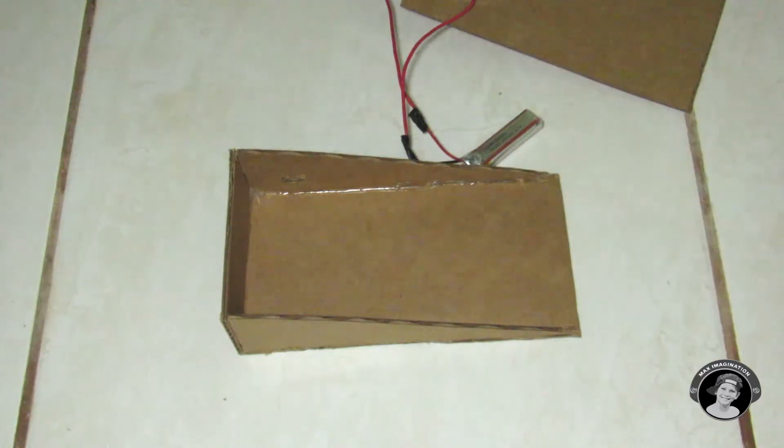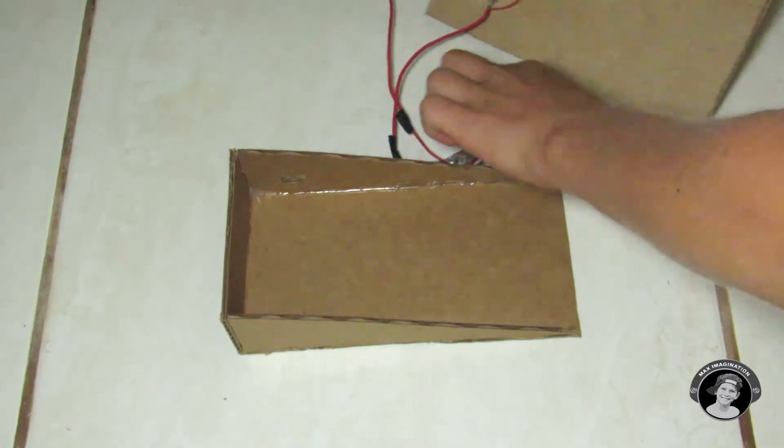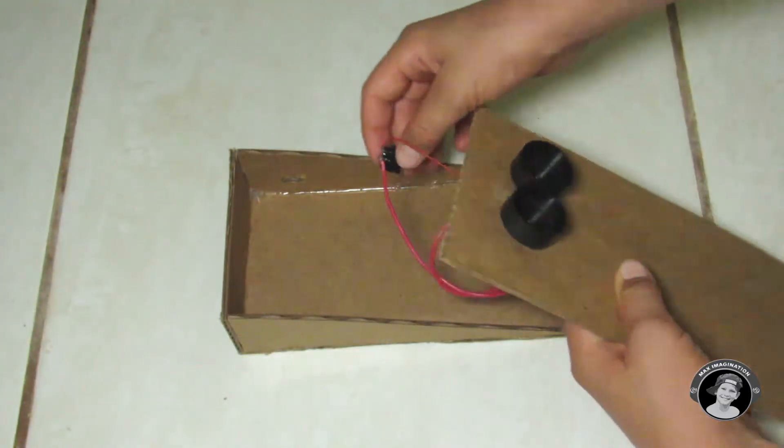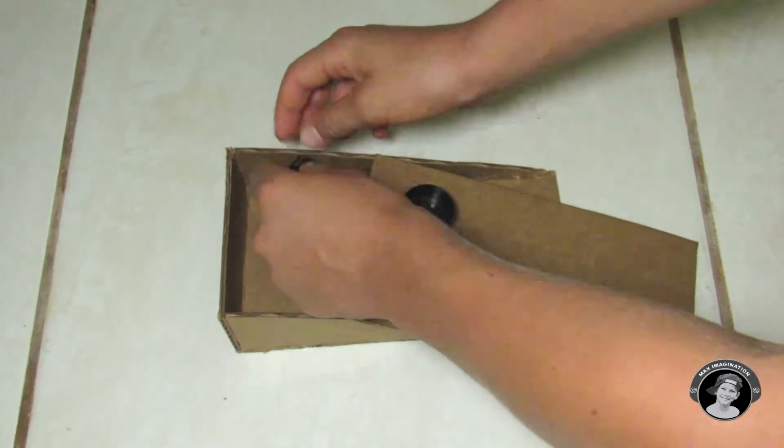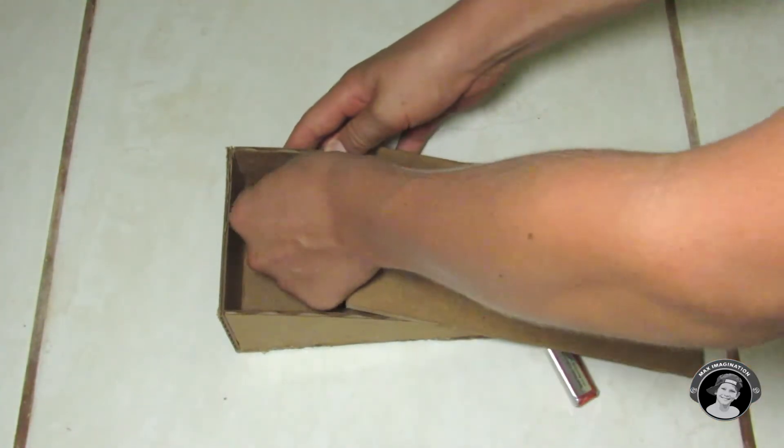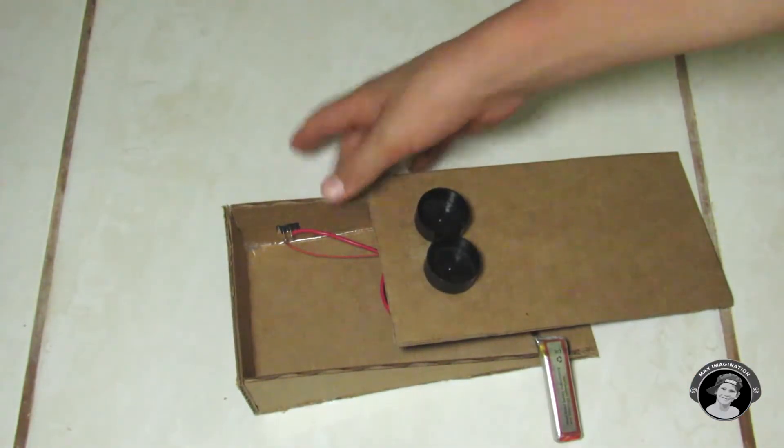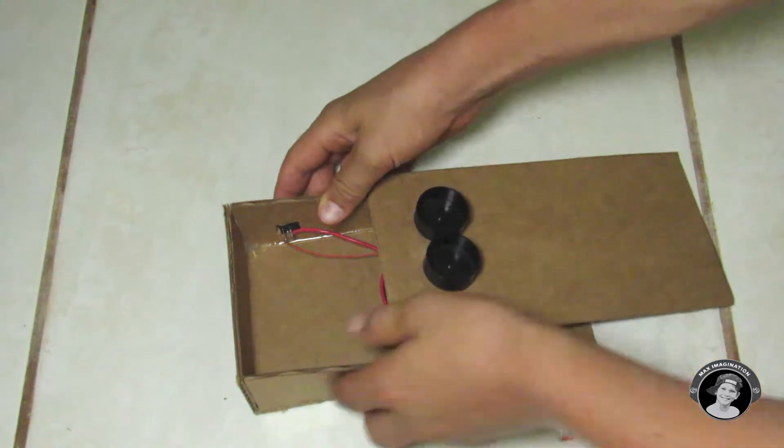Now you're going to take everything that you just built here and flip it upside down, but first of all you gotta push the switch through this hole here so it pops out on the other side. Make sure you make the hole so that it fits the switch - it's very important.